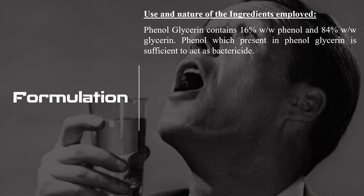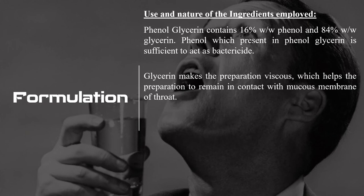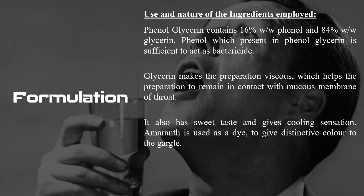Phenol glycerin is a preparation containing 16% of phenol and 84% of glycerin. The 16% concentration of phenol in the gargle formulation is sufficient for phenol to act as a bactericide. Glycerin increases the viscosity of the formulation, which helps the preparation remain in contact with the mucous membrane of the throat — the more viscous, the more it adheres. Glycerin also gives a sweet taste and cooling sensation to the formulation.